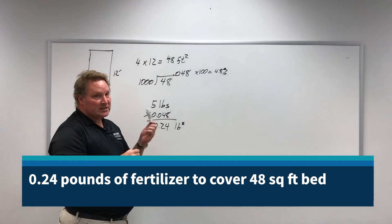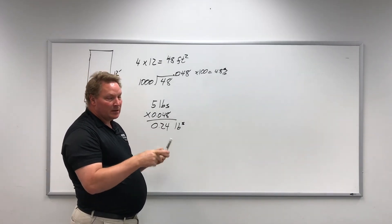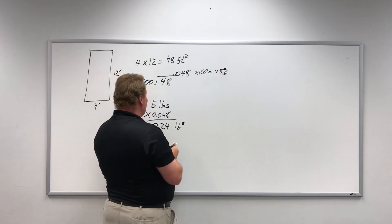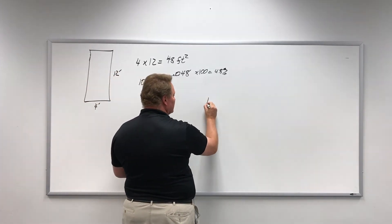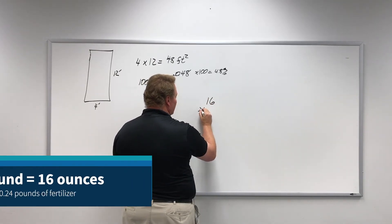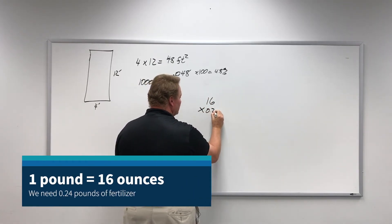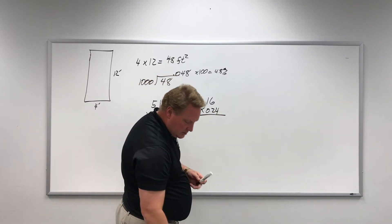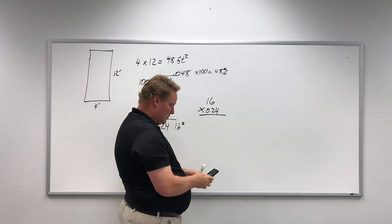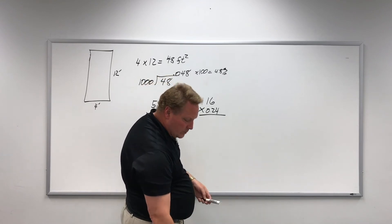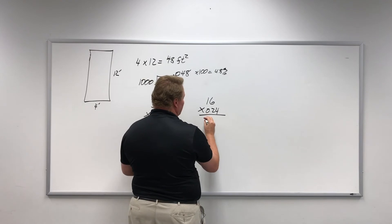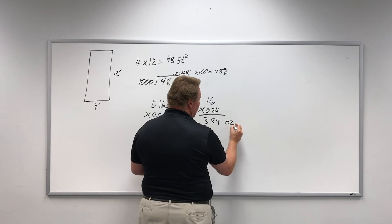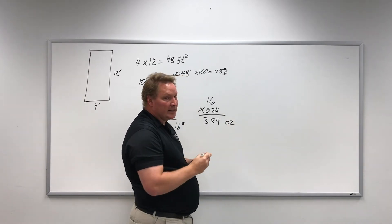Now I need to convert that from pounds to ounces because my scale that I'm going to be using today only weighs in ounces. There are 16 ounces in a pound, so I'm going to multiply 0.24 by 16, and that's going to give me 3.84 ounces. That's what I need to measure.